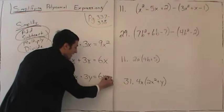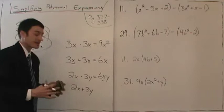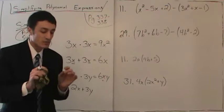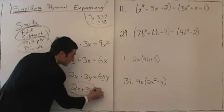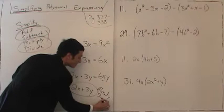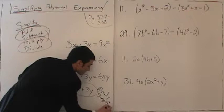But if I write 2x plus 3y, you are stuck — because when you add, something must match. We're looking for an exact match on the variables. Does x match y? No. So there is nothing you can do here. This is already simplified. There is nothing you can do because nothing matches.